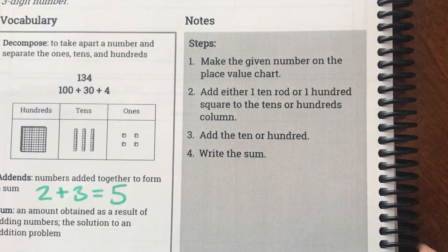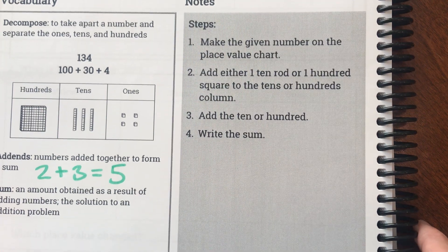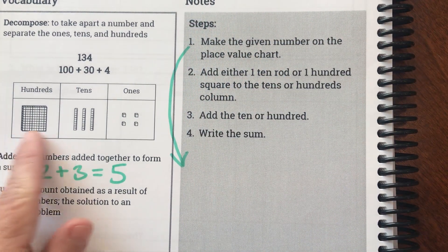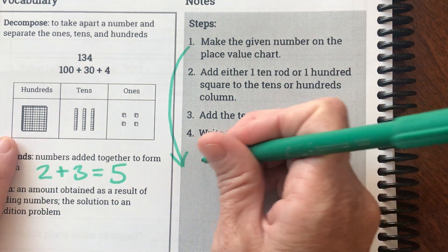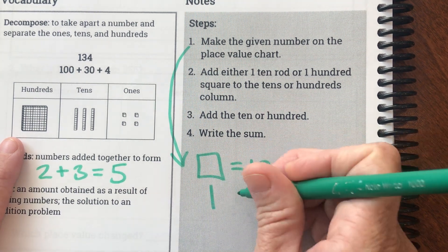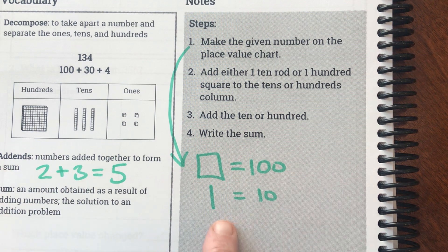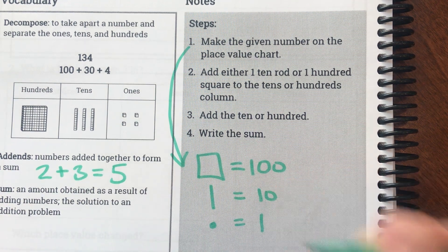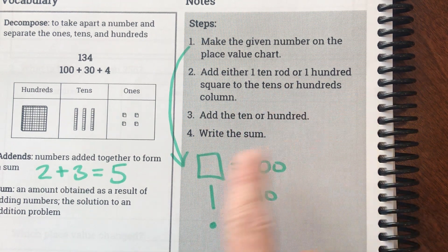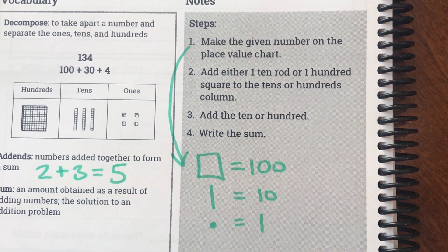Our steps tell us that we're going to make the given number on a place value chart and use base 10 blocks to draw it. When we draw, we don't use the same base 10 blocks they use because those would be challenging to draw. So we draw a square for 100, a vertical line for our base 10 rod, and a dot for our one unit. After we make our chart and draw it, we'll add one 10-rod or 100-square, whatever the question asks, and then write our sum.